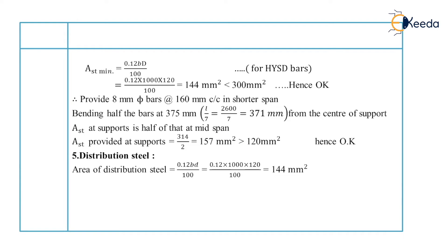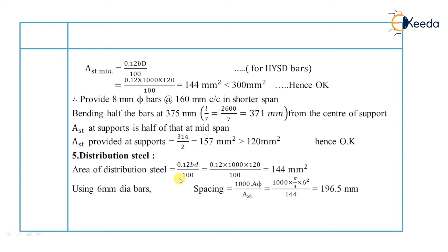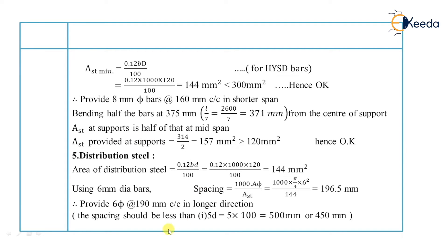The next step is to find the distribution steel. The formula is the same as minimum area of steel. For HYSD bars, area of distribution steel equals 0.12% of cross-sectional area, which is 144 mm². Using 6 mm diameter bars, spacing equals 1000 × (π/4 × 6²) / 144 equals 196.5 mm. The criteria for spacing of distribution steel is calculated spacing, or 5D, or 450 mm, whichever is less. We provide 6 mm diameter bars at 190 mm center to center.